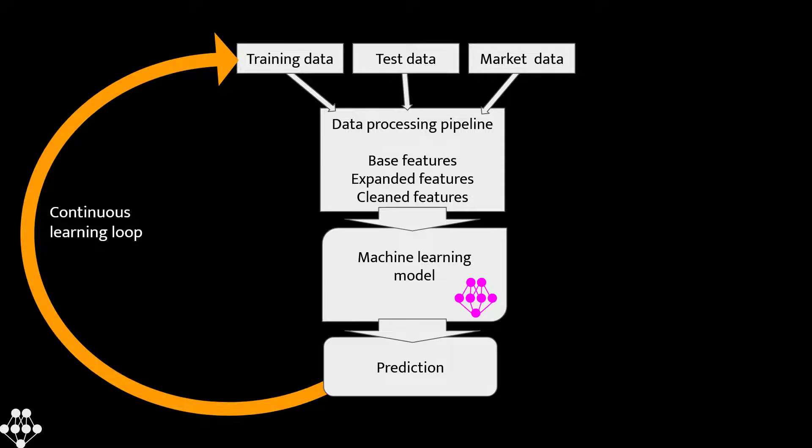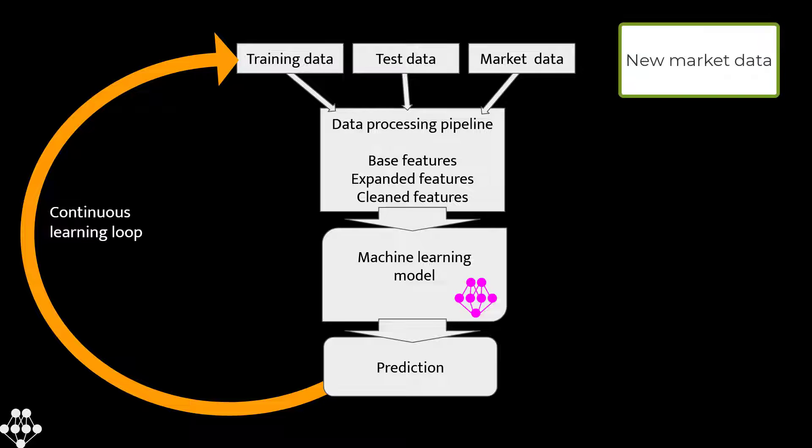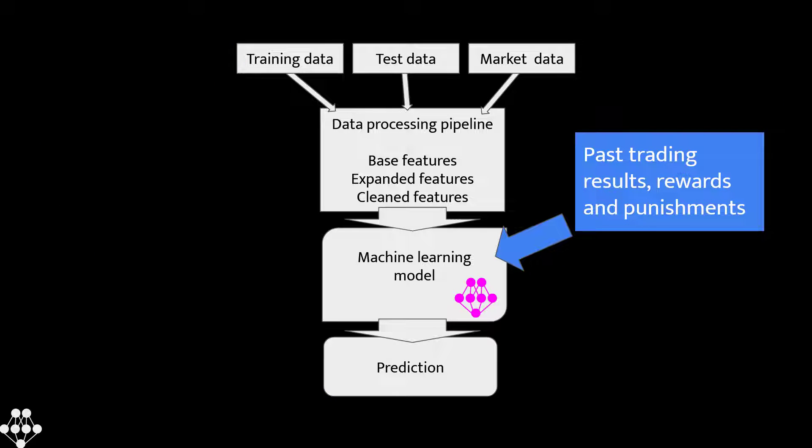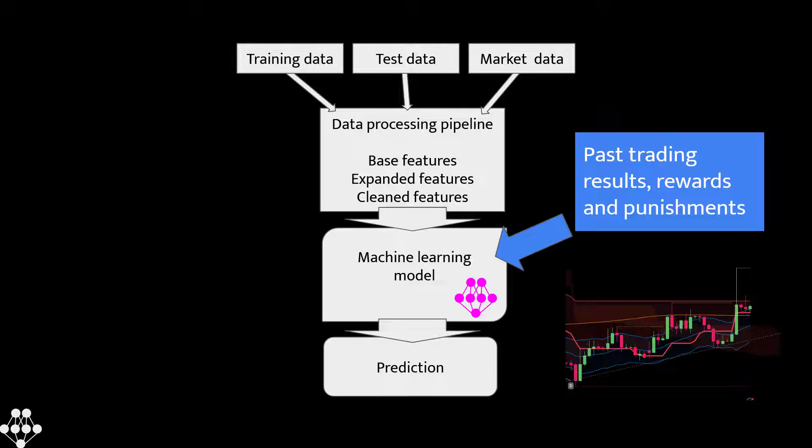To address this problem, the trader can use adaptive learning, which is a continuous loop of learning activities. Adaptive learning will also allow the model to update itself continuously as new data become available. This will ensure that the model is always up to date and provides the most accurate predictions possible. For example, he can update the model with new economic data or technical indicator readings. The trader may also use adaptive learning to update the model with the results of his own trades. This will allow the model to learn from its own mistakes and improve the performance over time.